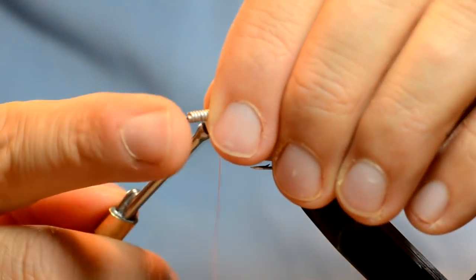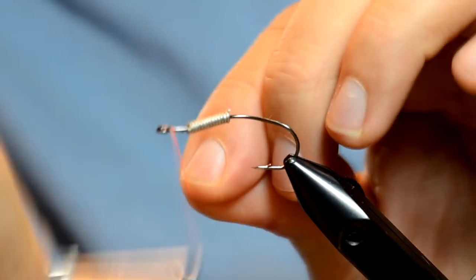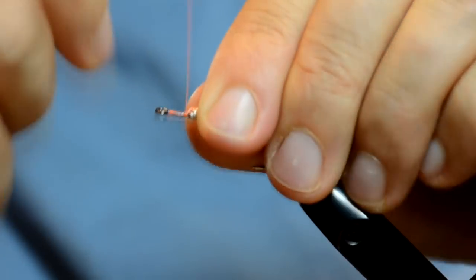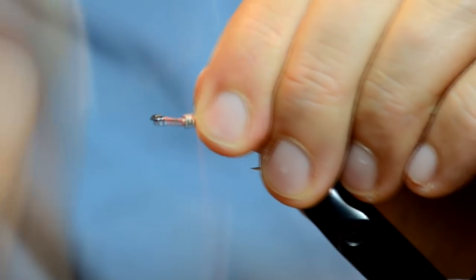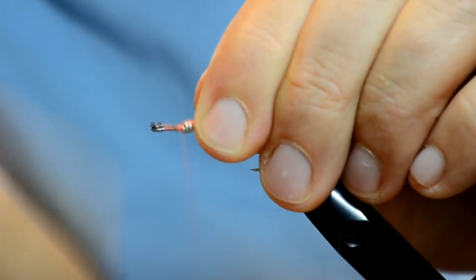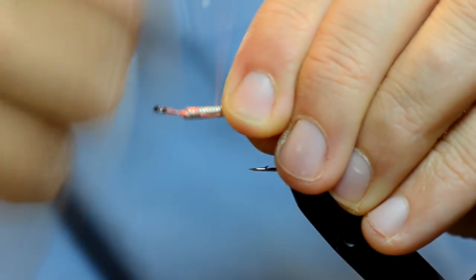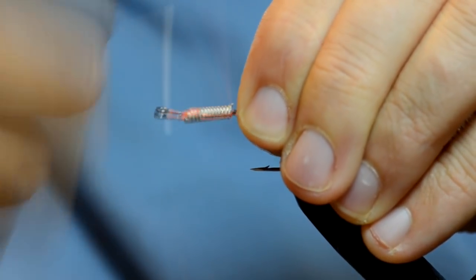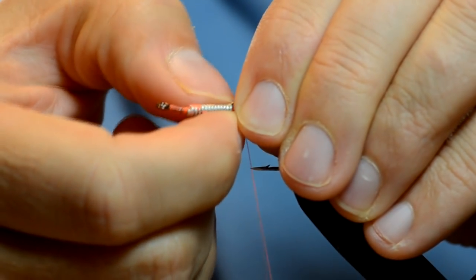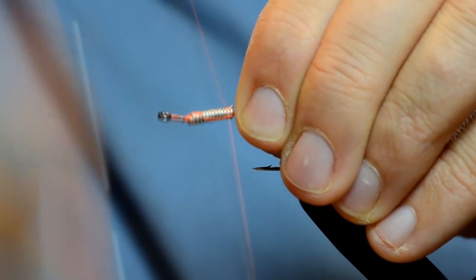I'm going to attach my thread at the eye, and then what I like to do here is just build up a little bit of thread to kind of taper this joint, and then work my way back over the lead. And then do the same on the other end.